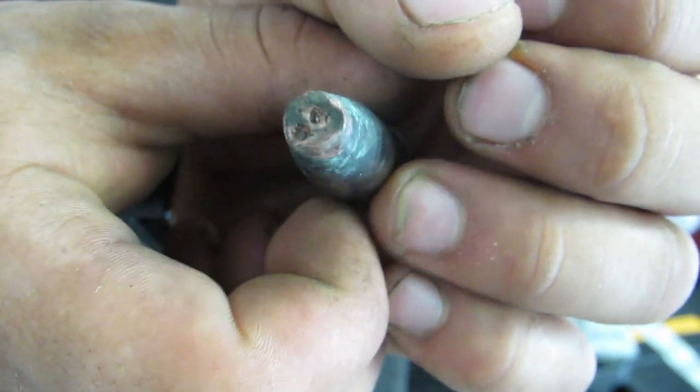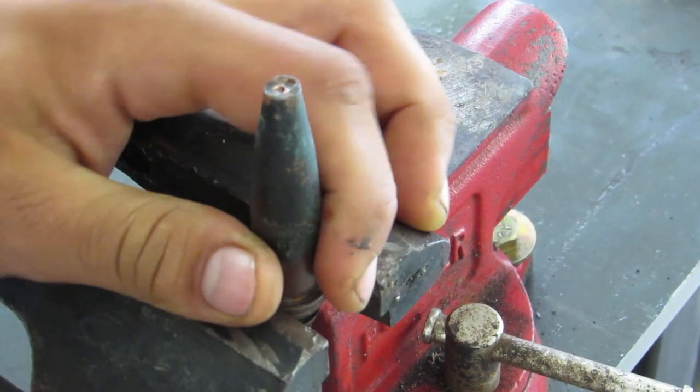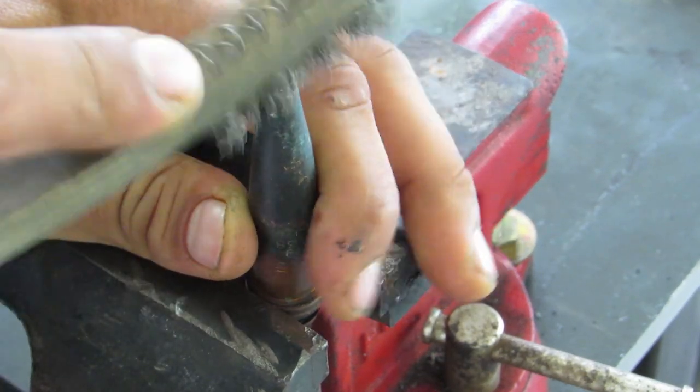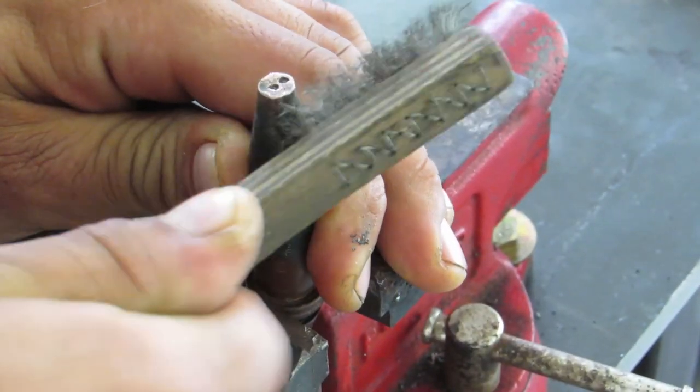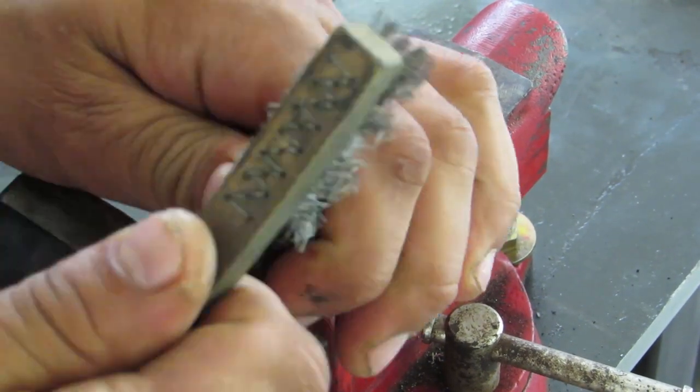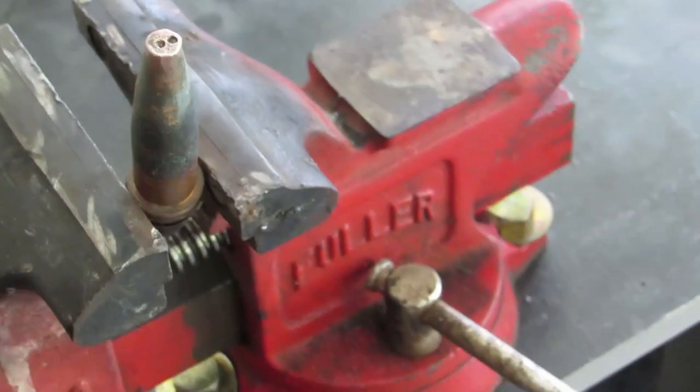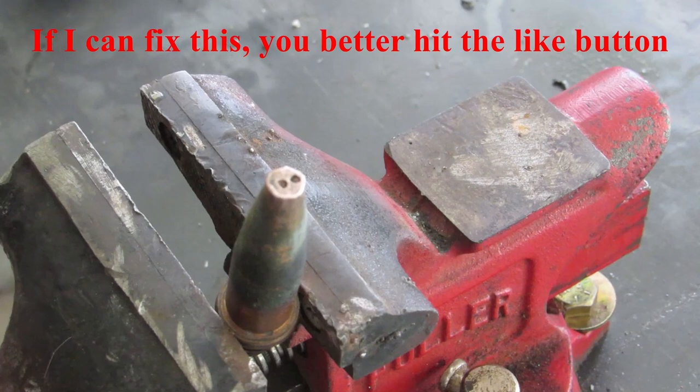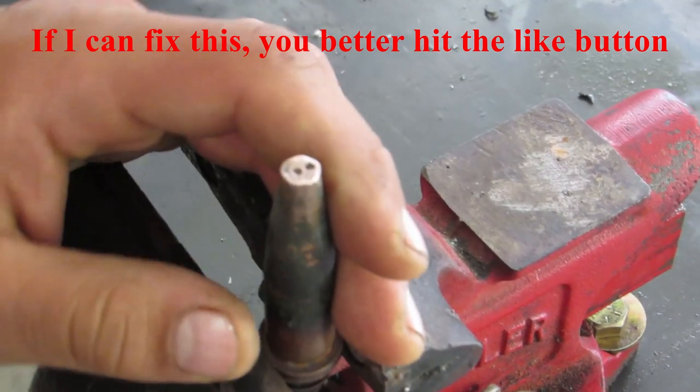We're gonna fix that. Now in reality your tip should never end up getting this bad, but we're gonna see if we can fix it. Stick around and find out how. So the first thing I'm gonna do is just kind of shine this up so I can see what's going on. There you go, you can't even really see any of the orifices on it. We'll see if we can fix it.